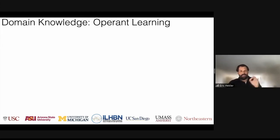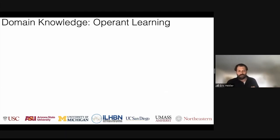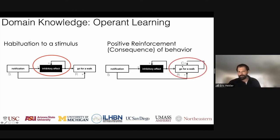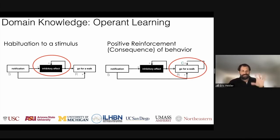We built on domain knowledge — particularly operant learning. We built on animal models around habituation to a stimulus and positive reinforcement. These are visualizations, but there's math underneath all of this, which I'll show in a moment. This is what Lisa developed with us. Another key set of domain knowledge was cognitive science related to decision-making — models that help us understand how someone makes a decision, including how context can have an impact.